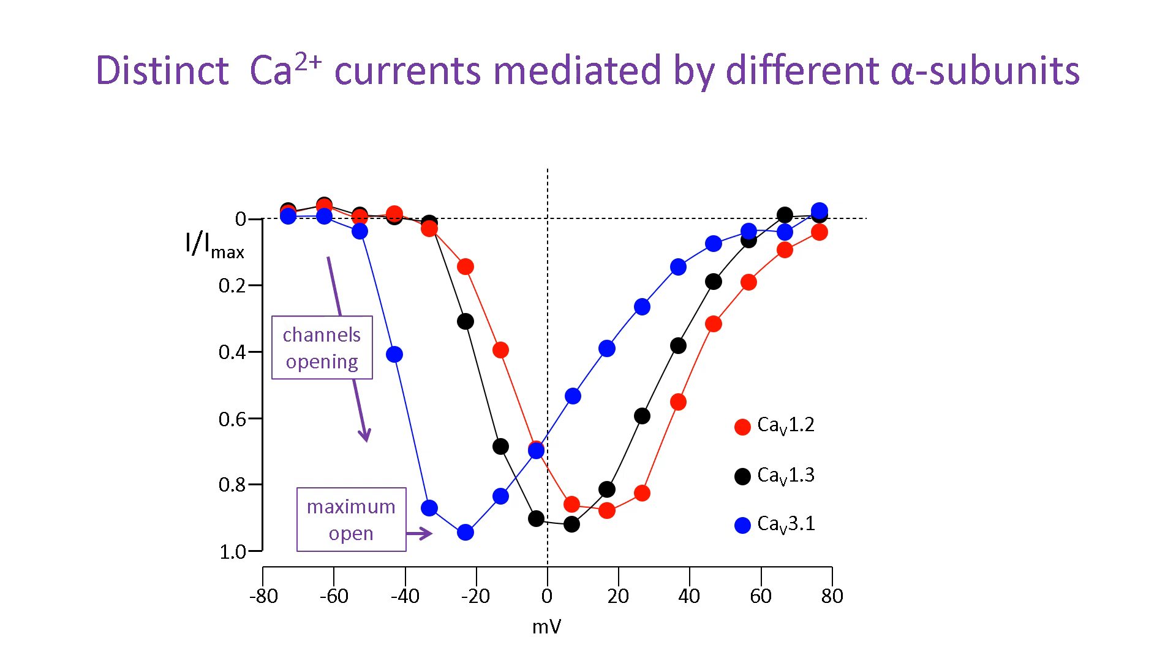As the membrane depolarizes further, current amplitude starts to decline again because the membrane potential is approaching the equilibrium or Nernst potential for calcium and the driving force for ion flow is reduced. Where the current through open channels is zero, that is the reversal potential for the ions flowing through the channel. If the only ions passing through the channel are calcium, this should equal the Nernst potential for calcium.